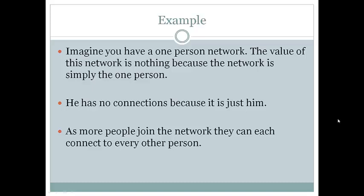For example, if you are the only person on a network, the value is zero for that network, because you're the only person and you're not connecting to anything else or anyone else. But as more people join the network, each person can connect to every other person.